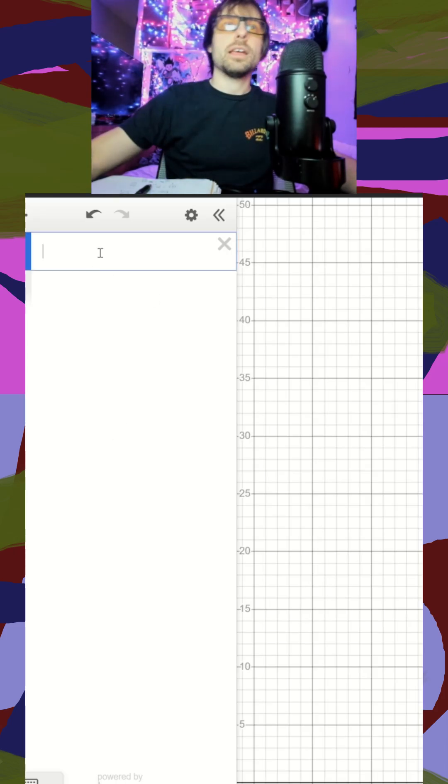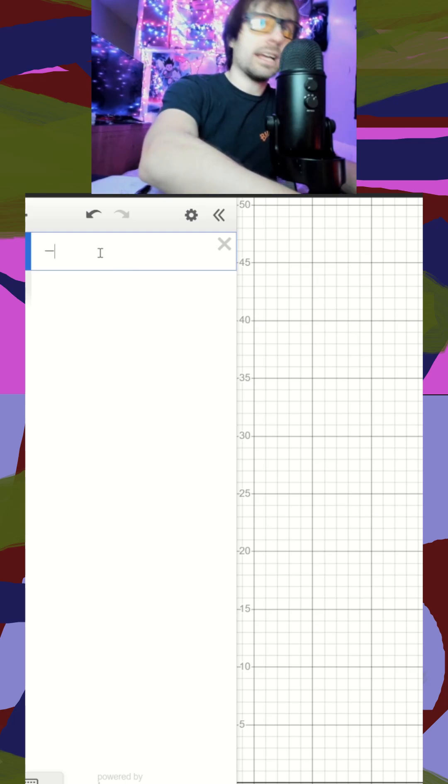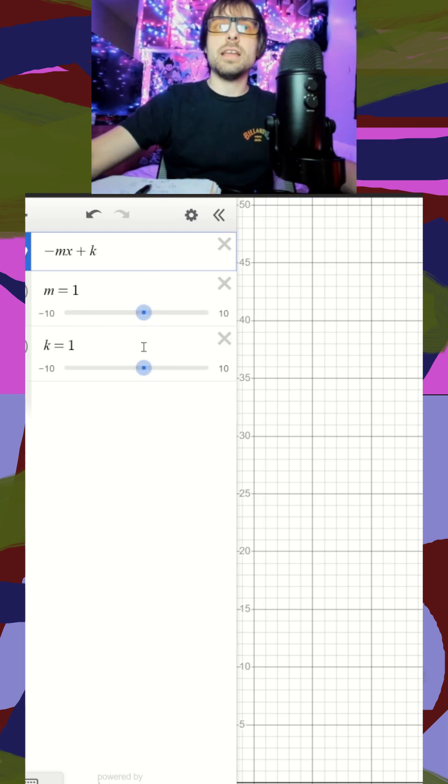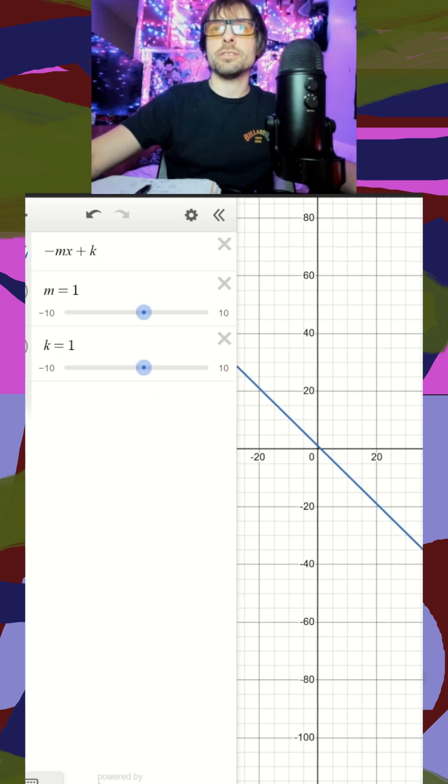So I pull my graph up here, and for our first equation we say negative MX plus K. We throw some sliders in, and again, all they said is these have to be positive, so that's easy. Let's zoom out and see our linear line here.